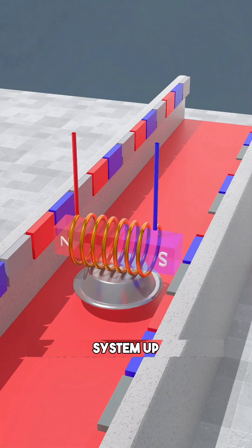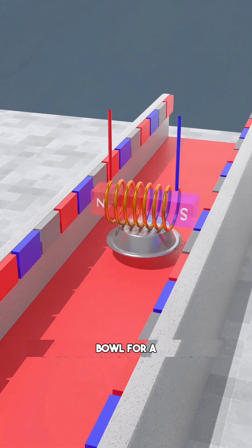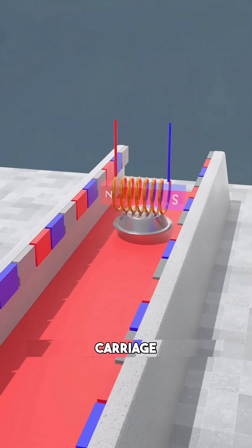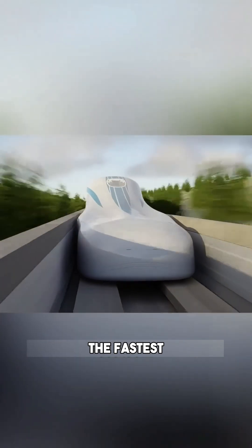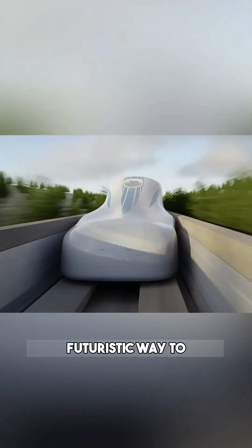Now, scale that system up. Swap the dog bowl for a high-tech, streamlined carriage, and you've reached the pinnacle of modern transit. Congratulations! You have just engineered the maglev train, the fastest, smoothest, and most futuristic way to travel on Earth.